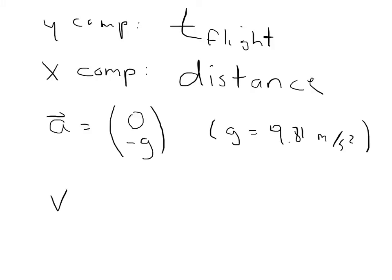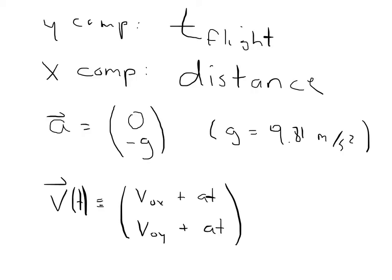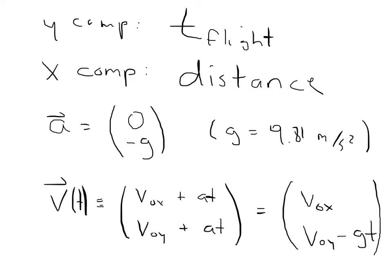The acceleration is a constant. The velocity as a function of time can be broken into the x and y components: V_x = V₀x + aₓt and V_y = V₀y + aᵧt. This simplifies considerably because the acceleration in the x direction is zero and the acceleration in the y direction is −g. So the velocity as a function of time is V₀x in the x direction and V₀y − gt in the y direction, meaning the velocity in the x direction is constant, but the velocity in the y direction is not.